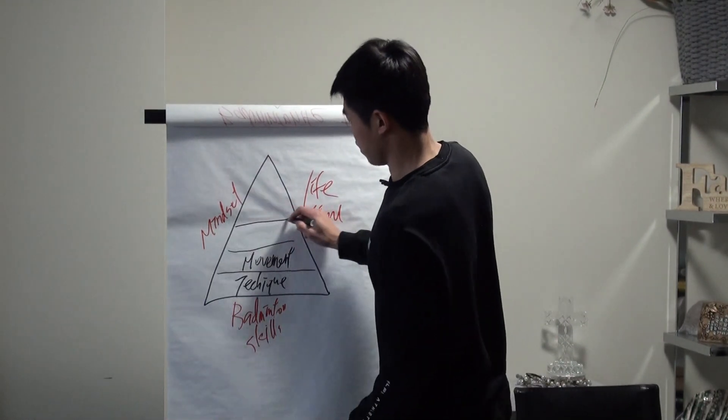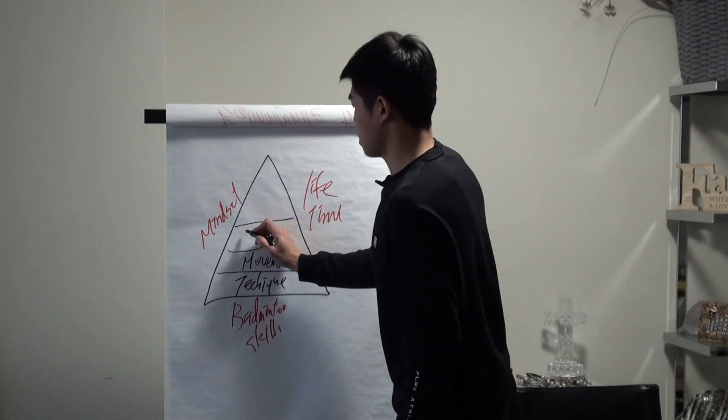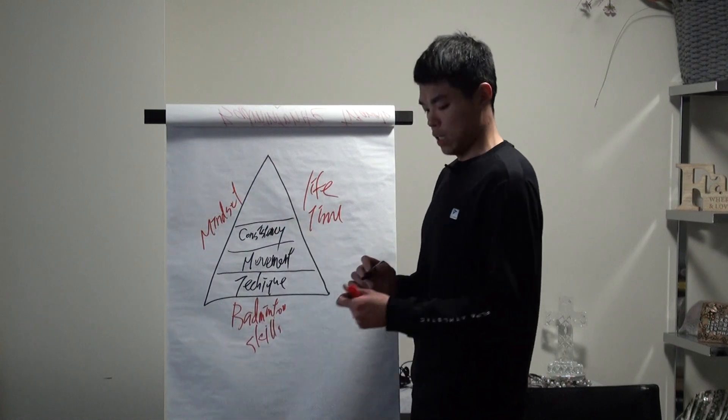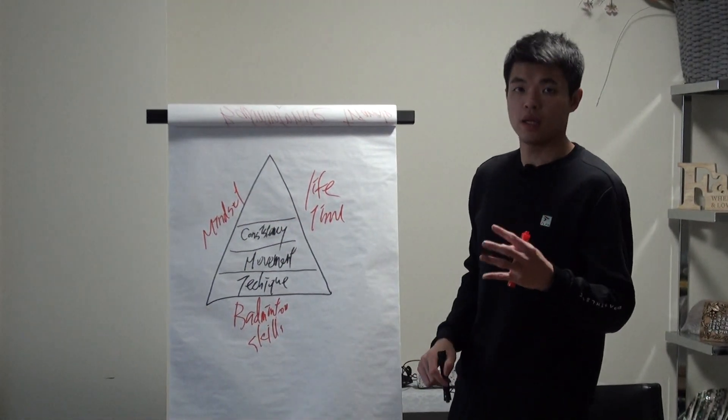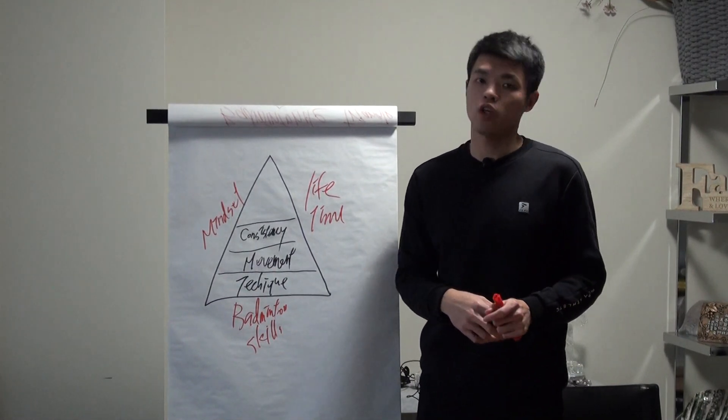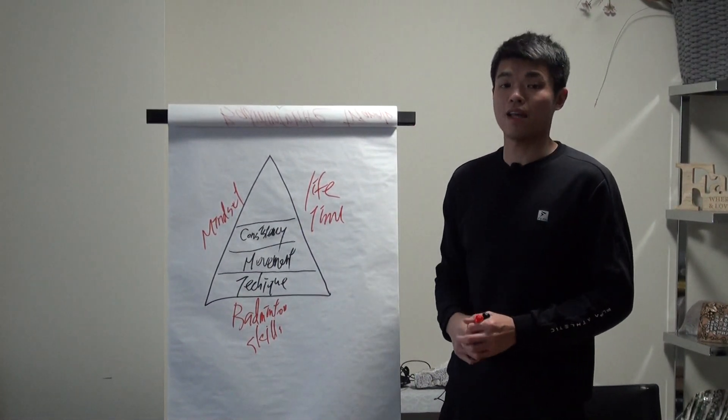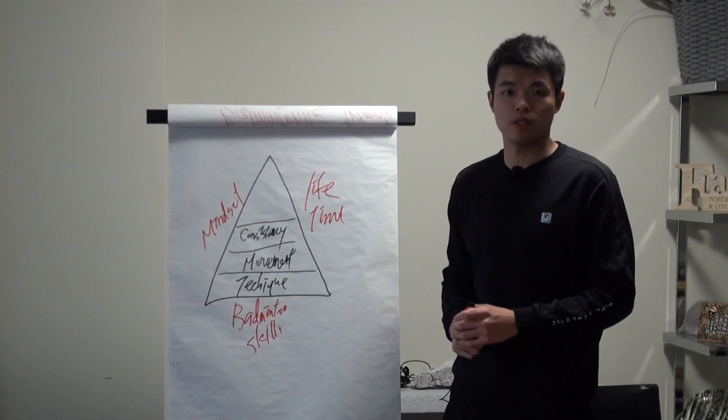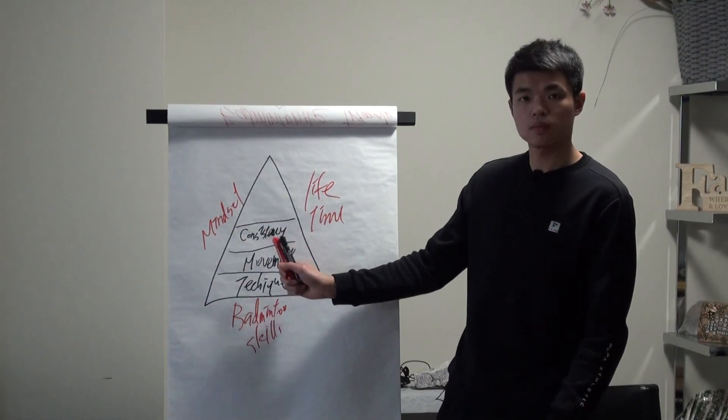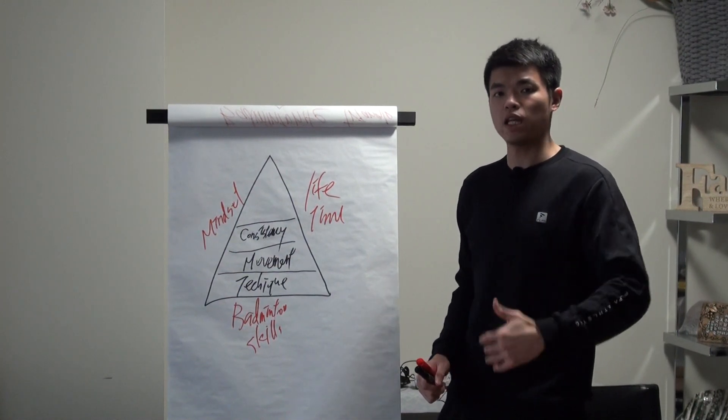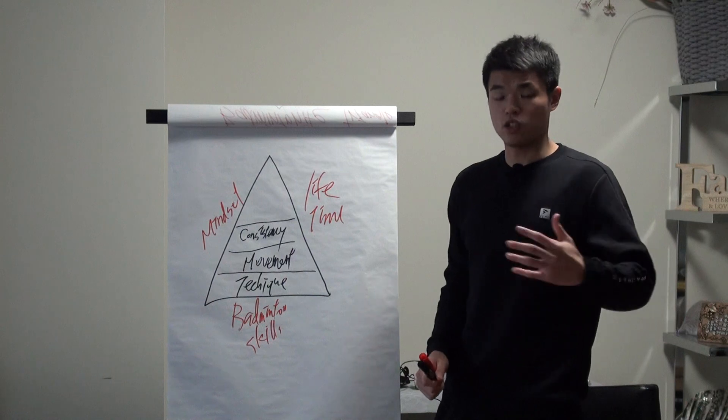And then once you're good at it, you're going to move on to the third layer. The third layer, I would call consistency. In this layer, you're going to work on what we say isolation. So maybe you see a lot of athletes, they train one on two, two on three, those kind of drills. They're not playing games. They work on this. We always compete with ourselves. How many rallies we can hit, how many rallies we can improve against each other.